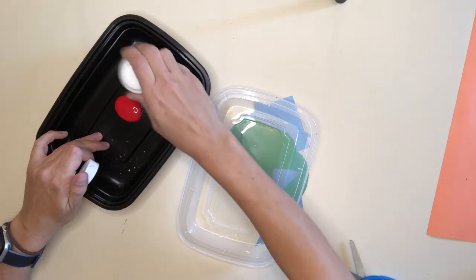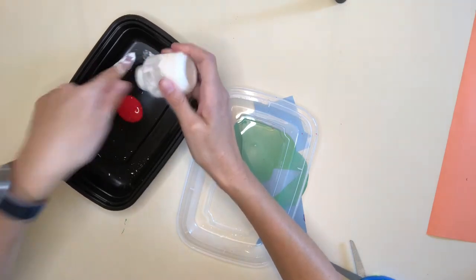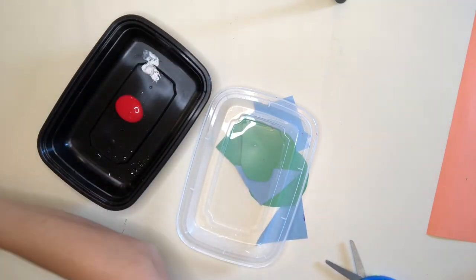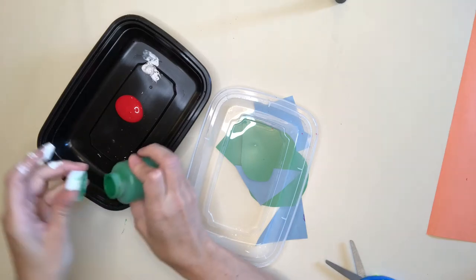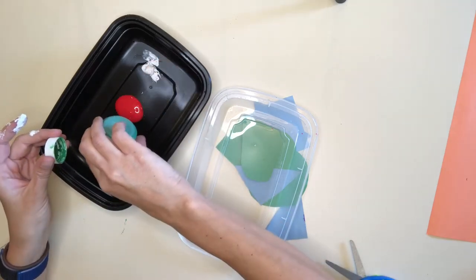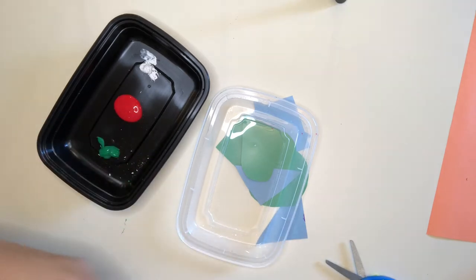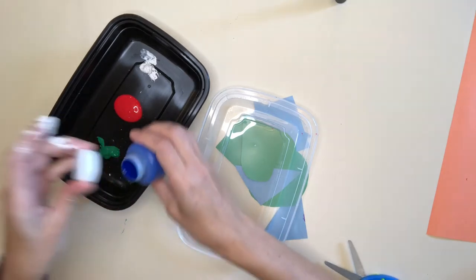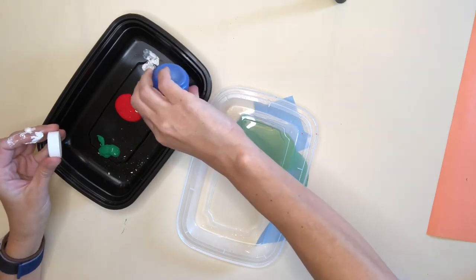And some green. And finally, some blue. And if you notice, I'm putting these in all sorts of different areas of the container so that there will be all sorts of different colors all over my shapes.